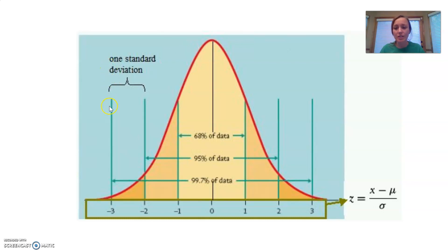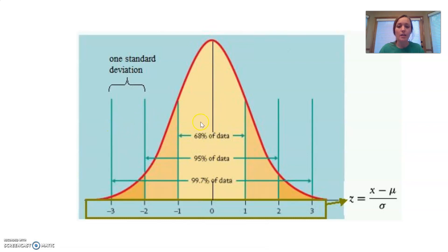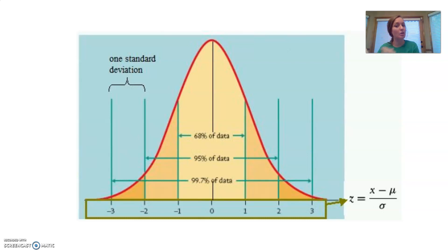You can see three standard deviations to the left — below average — and the line in the center shows the average IQ score of 100. We have three units of measurement below and three above. We will always have three units of measurement regardless of how spread apart the data points are, and we call those measurements standard deviations.